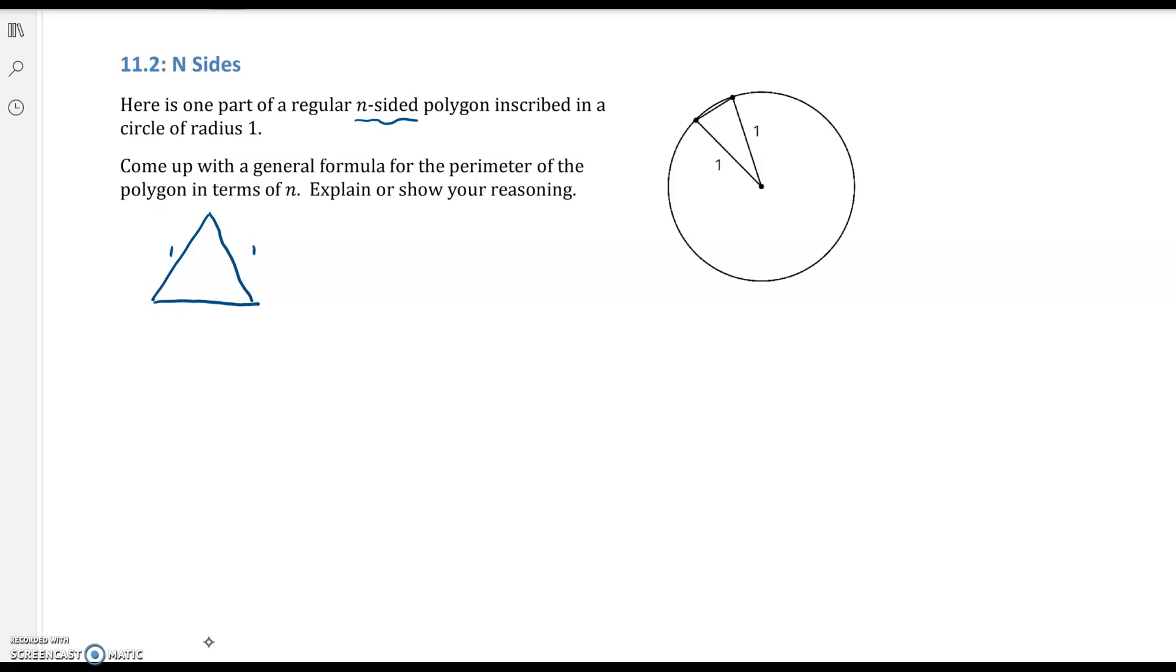Each one of these legs is one unit long and my side length is down here on the bottom. That's the entire side length, so we'll call that S. What we want to do is figure out how big S is because the perimeter is going to be the number of sides times S, so it's going to be N times S.